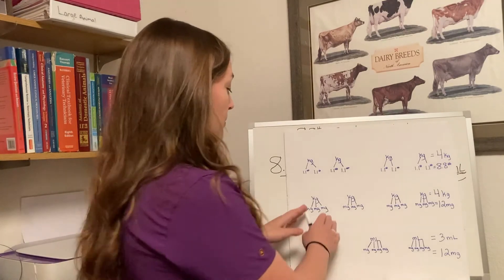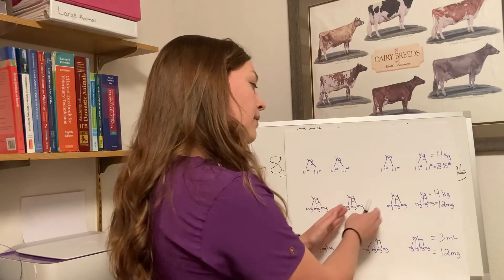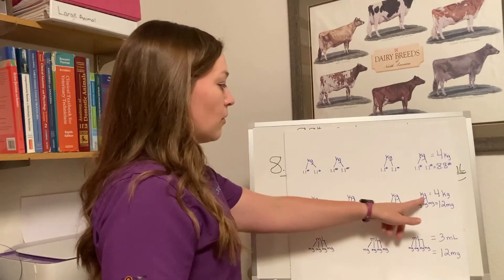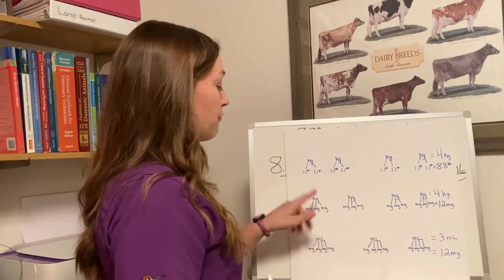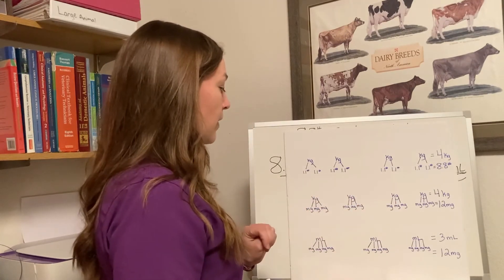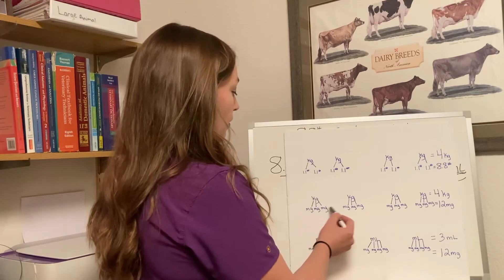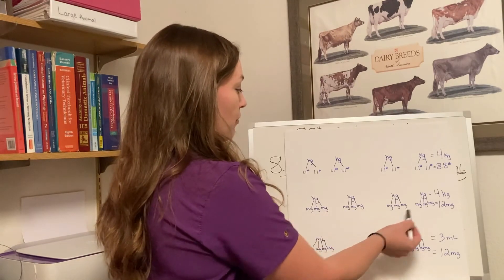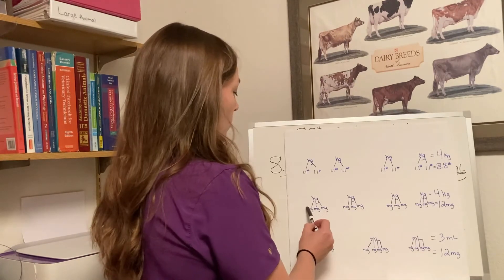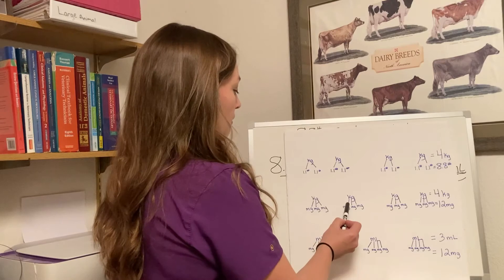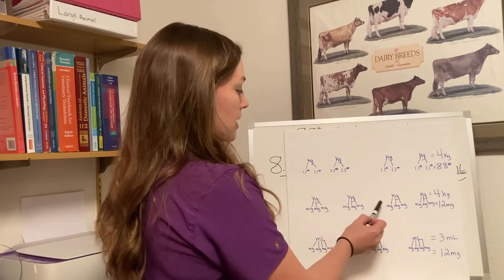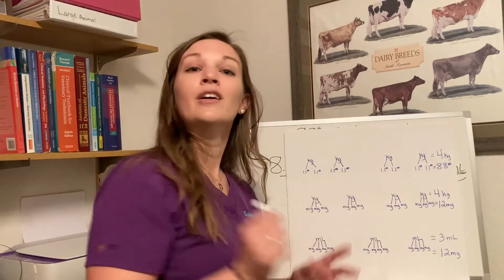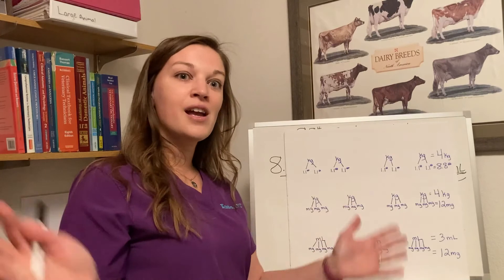The next part of the equation: the patient needs 3 milligrams for every one kilogram of weight. So I made little 3-milligram groupings — one grouping per kilogram of weight. With four kilograms, that gives us four groupings of 3 milligrams, counting up to 12 milligrams total.